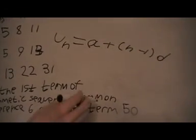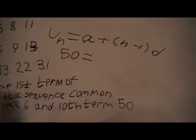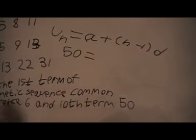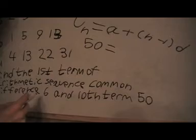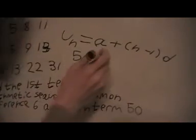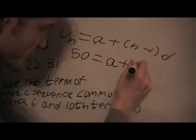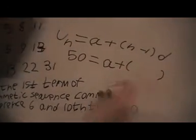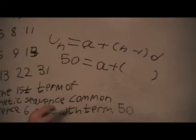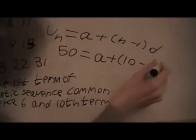If u_10 is 50, we can say 50 = a + (n - 1)d. We know what the common difference is because it tells us in the problem that's 6. So we can put a because we don't know what a is, it doesn't tell us what a is. And it tells us that 50 is the 10th term so n is 10, and the difference is 6.